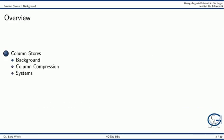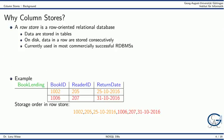In this session we will cover columnar data storage. In a so-called row store, data are stored in tables, and on disk, data in a row are stored consecutively. In our example, first the row for book ID 1002 is stored, and then the entire row for book ID 1006.